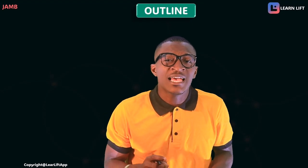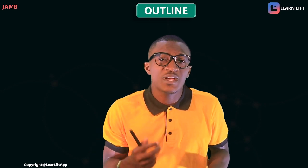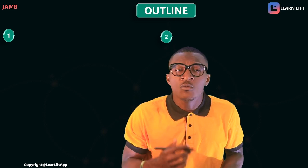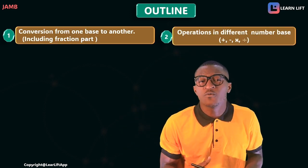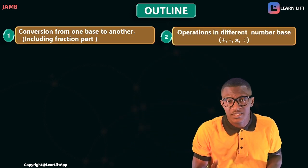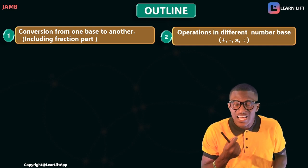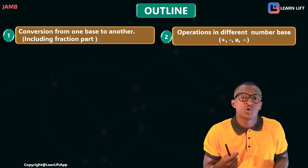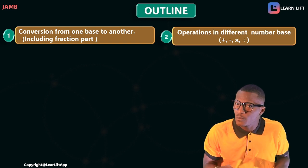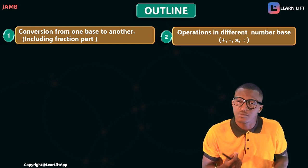Now let's start this class by discussing what we call number base. Let's take the outline as provided by the JAMB syllabus. We're going to break the outline into two parts. Number one, we're going to learn conversion from one base to another base, including whole numbers and fractions. Number two, we're going to learn the operations of number base — addition, subtraction, and multiplication.